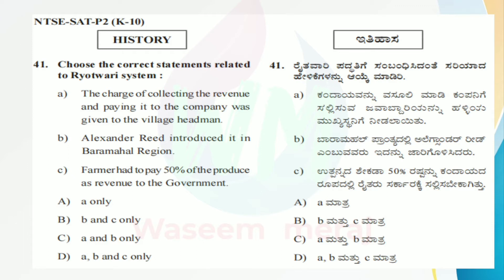Question 41: Choose the correct statements related to the Raitavari system. Statement A: the charge of collecting the revenue and paying it to the company was given to the village headman. Statement B: Alexander Reed introduced it in the Baramahal region. Statement C: the farmer had to pay 50 percent of the produce as revenue to the government. Option A: A only. Option B: B and C only. Option C: A and B only. Option D: A, B and C only.